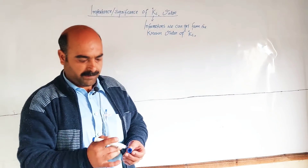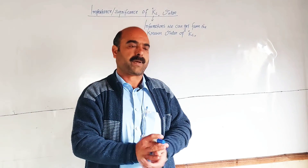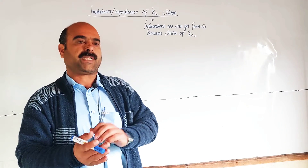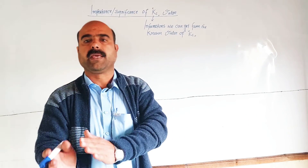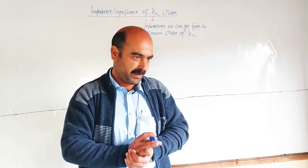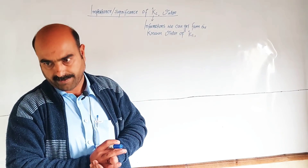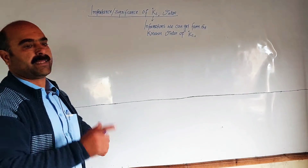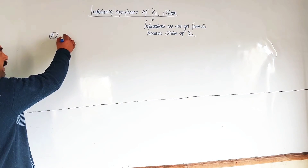When a system reaches equilibrium, a constant value Kc is established. From this Kc value, we can predict the direction of a chemical reaction. The total information from Kc includes predicting the direction of the chemical reaction.